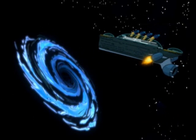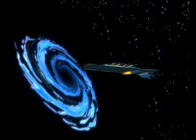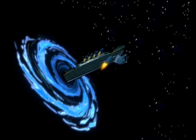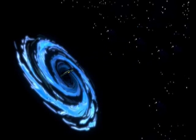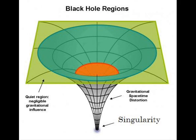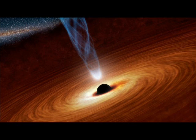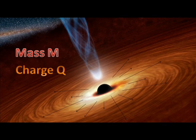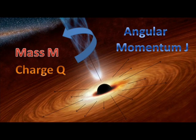A black hole is a region of spacetime such that matter and radiation may enter but from which they may not escape. The point singularity is separated from the outside world by an event horizon. A black hole is characterized by its mass, charge and angular momentum.